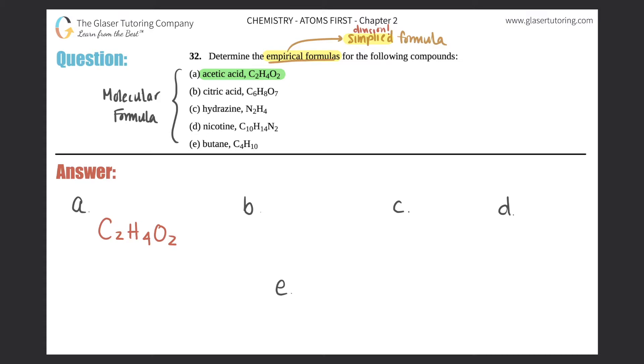For letter (a), I have two carbons, four hydrogens, two oxygens. Is there a number between two, four, and two that I can divide by to get a simpler number? The answer is yeah, right? They all have the number two in common.